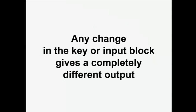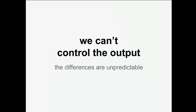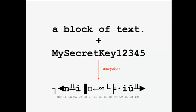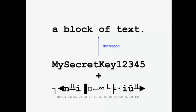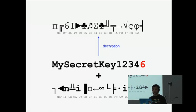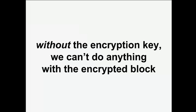Any change in the key or input block gives a completely different, unpredictable output — we can't control the output because of that. The opposite operation also exists, because encrypting wouldn't make sense if you couldn't revert it. You had an encryption operation giving you a result, and now you can recover the original content from the same key and the encrypted block. If you change the key slightly, you get a completely different result — so with the right key you can restore the original block, and without it, we can't do anything.